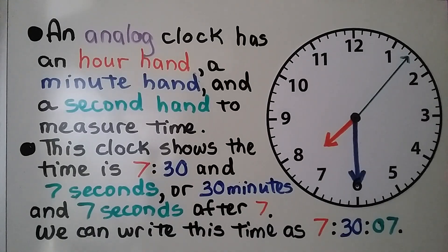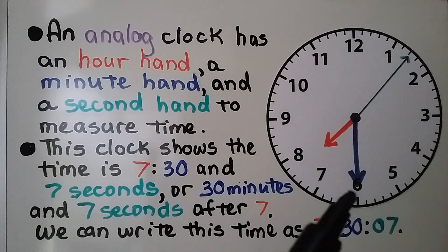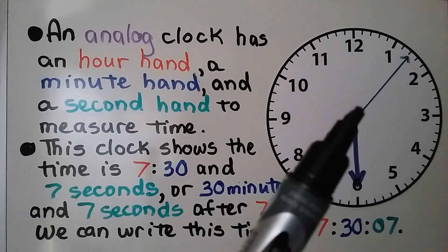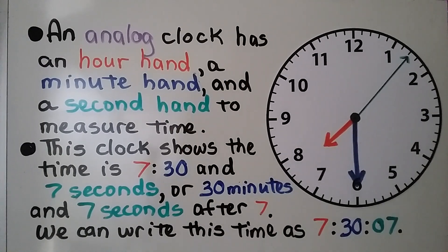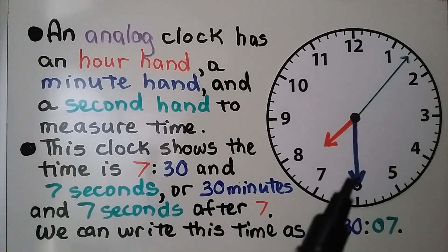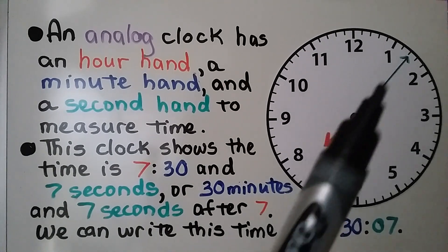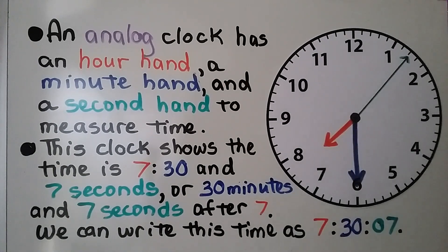An analog clock has an hour hand, that's this short one, a minute hand, that's this longer blue one, and a second hand, that's this very thin long one, to measure time. This clock shows the time is 7:30 and 7 seconds, or 30 minutes and 7 seconds after 7. We can write this time as 7:30:07.